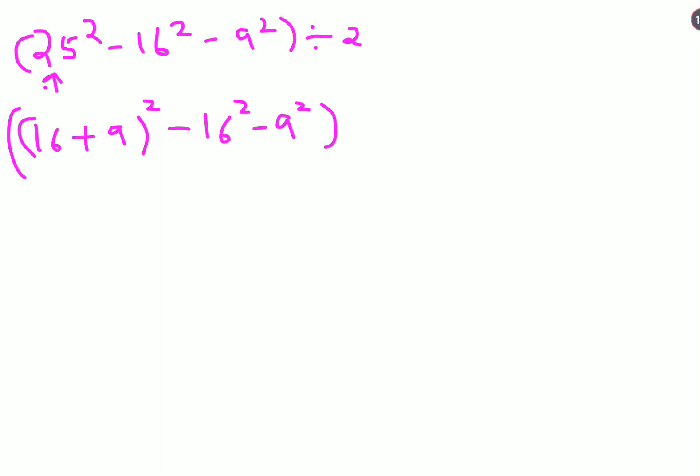This is basically (a + b)². So we get 16² + 2·16·9 + 9² - 16² - 9². Everything is still divided by 2.